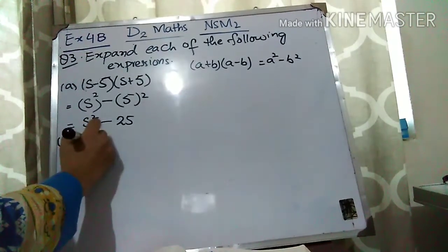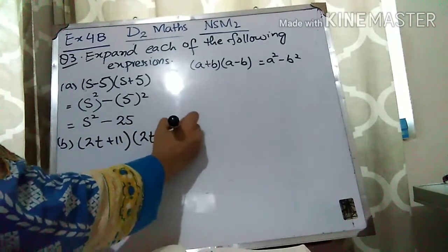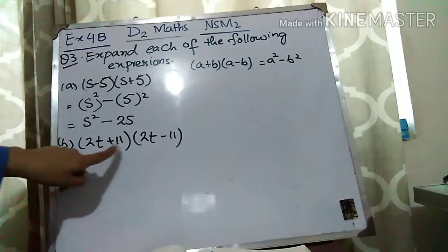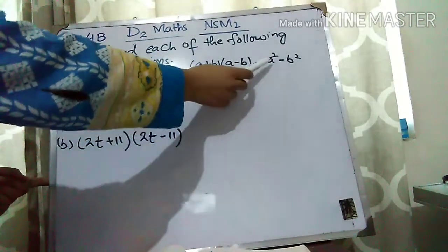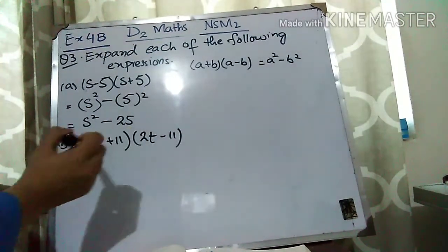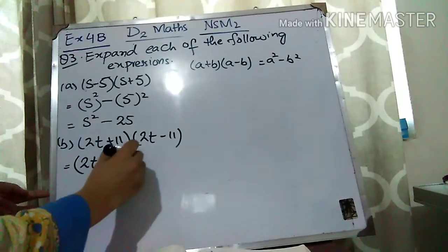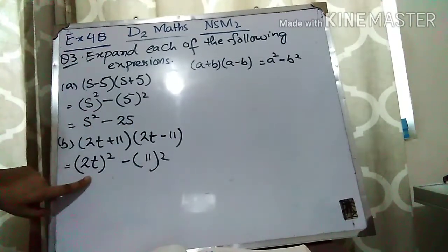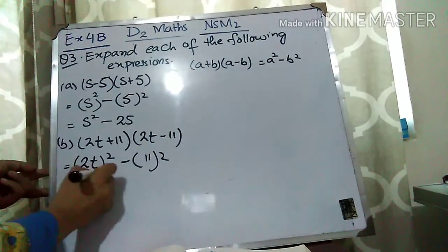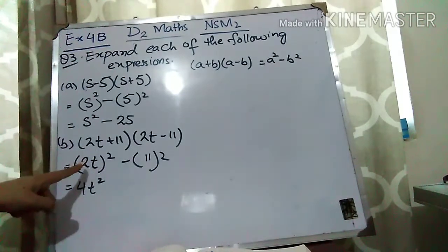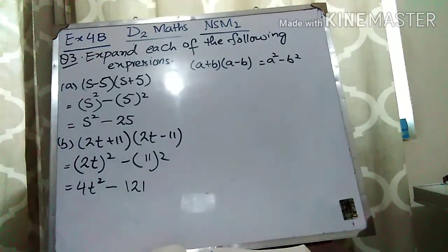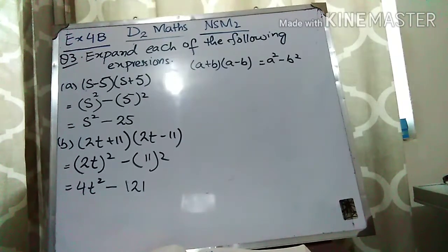Part B is (2T plus 11)(2T minus 11). Again, same formula (A plus B)(A minus B) equals A square minus B square. Here A is 2T and B is 11. So A square minus B square: (2T) square means 2 square times T square — 2 twos are 4 — so 4T square. Minus 11 square: 11 times 11 is 121. The answer is 4T square minus 121.